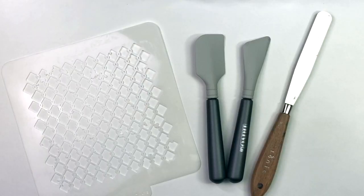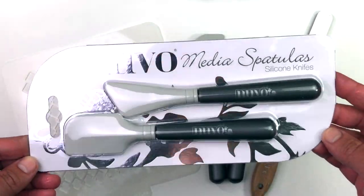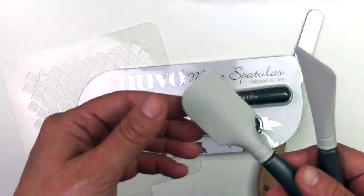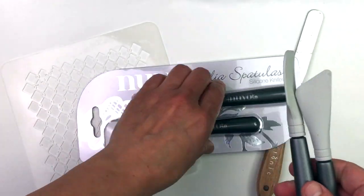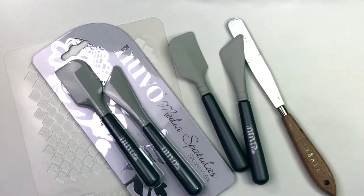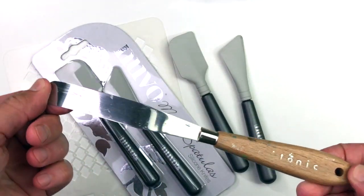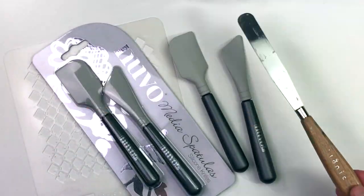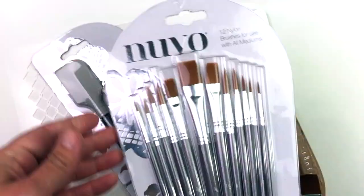Now Tonic Studios makes quite a few different tools that make applying this crackle mousse very easy. The first one I want to show you are these Nuvo Media Spatulas. These are spatulas that have silicone heads, and they are flexible heads, so it makes it really easy to apply. This is a palette knife with a flexible metal top, and that's actually my favorite tool.